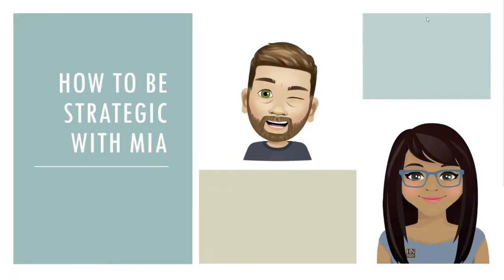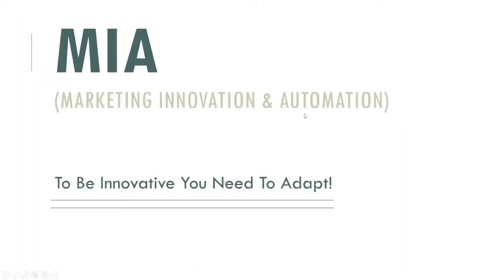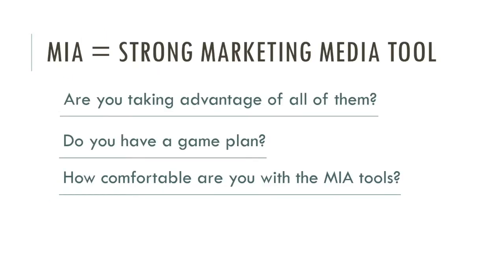This class is all about how to be strategic with Mia. Mia is your innovation and automation program, but to be innovative, you also have to adapt. Mia is a strong marketing media tool. The key question is: are you taking advantage of all the different tools that Mia gives you? Do you have a game plan for whenever you get a new listing or a status change? How comfortable are you with the Mia tools? These are three very important questions.